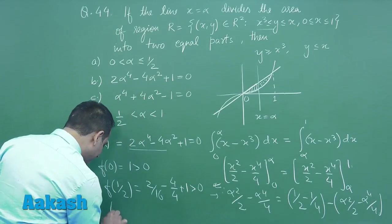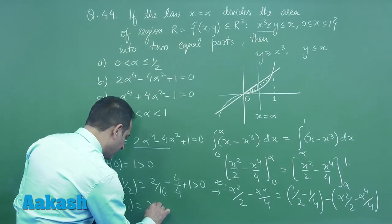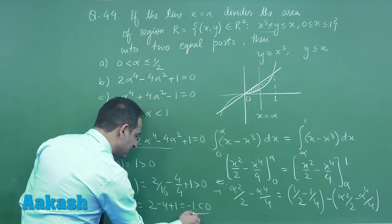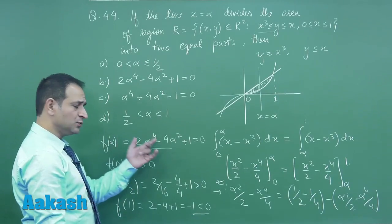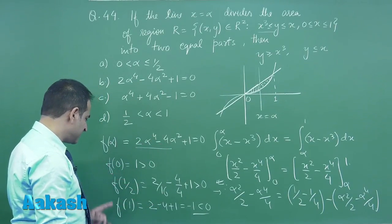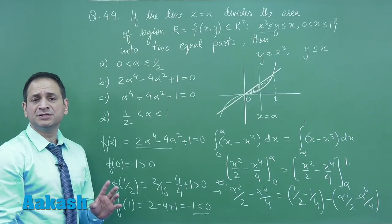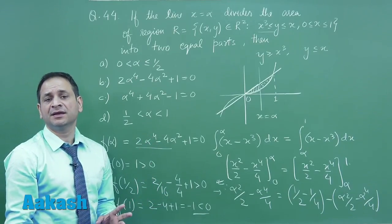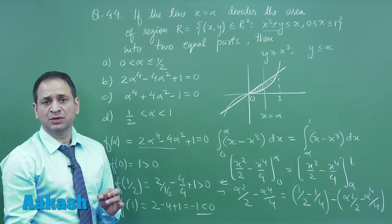But if you calculate the value at 1 you can clearly see it is 2 - 4 + 1 which is -1 and it is less than 0. So α is the root of this equation which is clearly lying between 1/2 and 1 because at 1/2 and 1 we are getting the opposite sign. Definitely it is a root which is lying between 1/2 and 1.